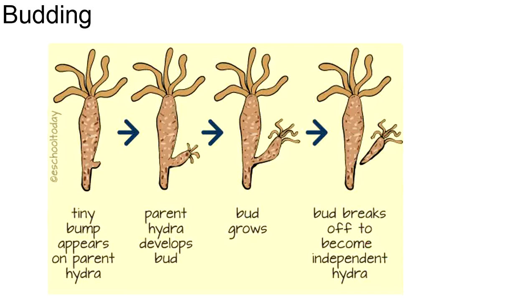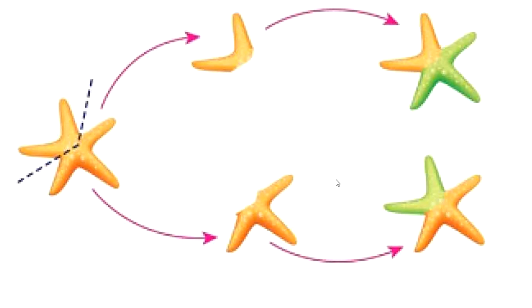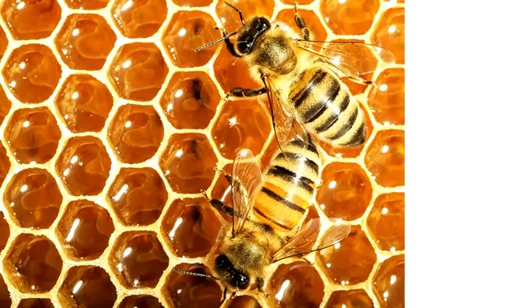Another method is budding. Organisms such as hydra, sponges, and some fungi can reproduce through budding. A small part of the parent's body grows into a tiny, complete version of the parent. A tiny bump appears on a hydra and develops into a bud, which then breaks off into an independent hydra. Starfish also go through budding by breaking apart and growing new parts.